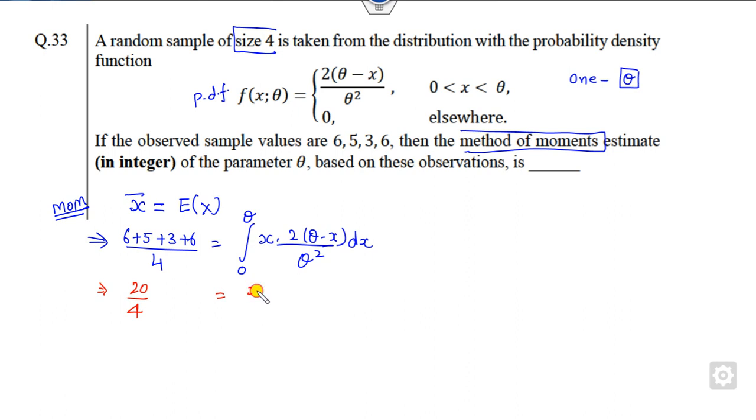This is my 2x over theta squared is outside. So integration of x is nothing but my x squared upon 2, and x squared this is x cubed upon 3. Now 2 upon theta squared, it will be my theta cubed over 2 and this is my theta cubed upon 3.